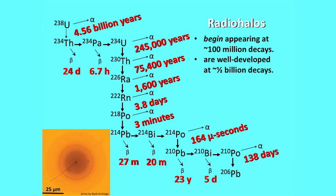Uranium-238 decays to thorium-234 with a half-life of four and a half billion years. At today's rates, it would require four and a half billion years for half of it to decay. On the other hand, polonium-214 decaying to lead has a half-life of 164 microseconds — in ten half-lives, less than a thousandth of a second, you've gotten rid of essentially all of it. So we have quite a range of half-lives, and these are going to be important.